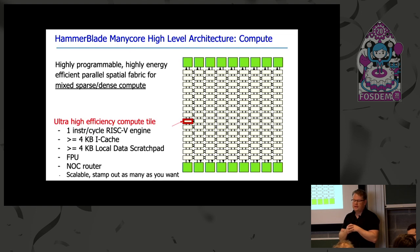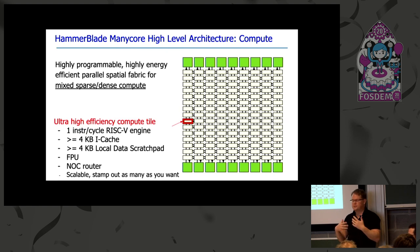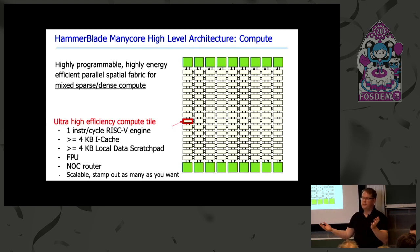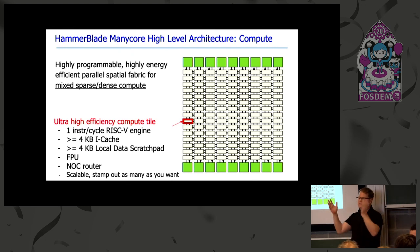At the very heart of the ManyCore is a super high efficiency compute tile — a one instruction per cycle RISC-V engine. Each tile has an instruction cache and a local data scratchpad. You can adjust the size, but generally you want it small because the smaller it is, the more cores you can fit on the chip. Each core also has an FPU and a router to talk to other cores. It's very scalable — you just stamp out as many cores as you want to fill the available silicon area.